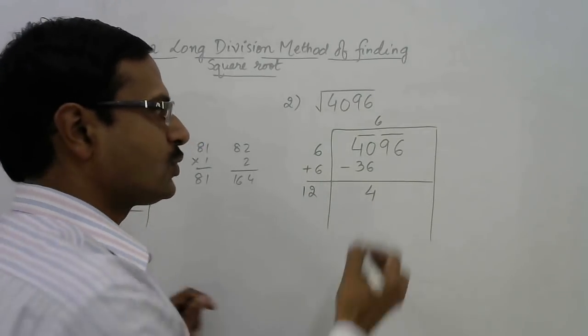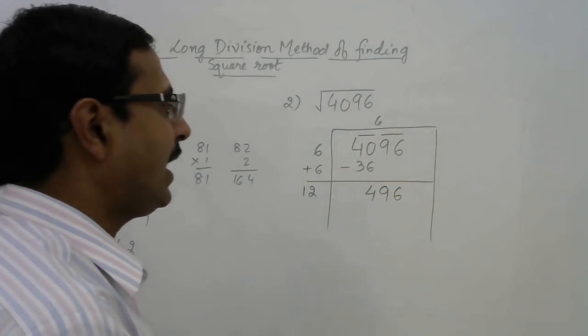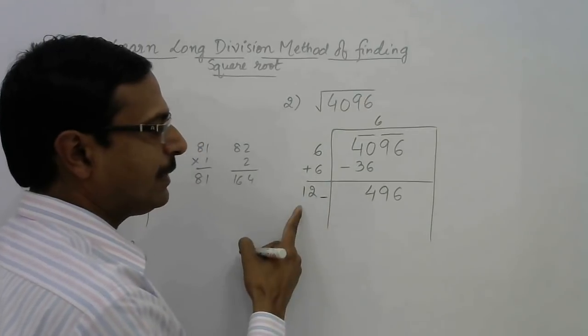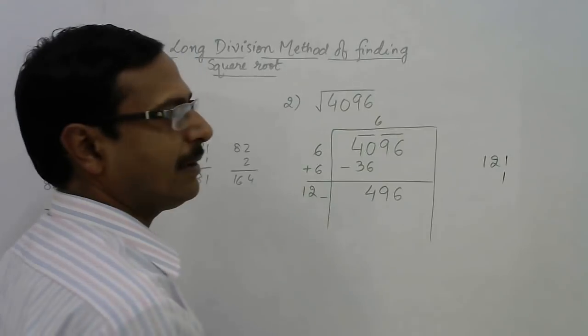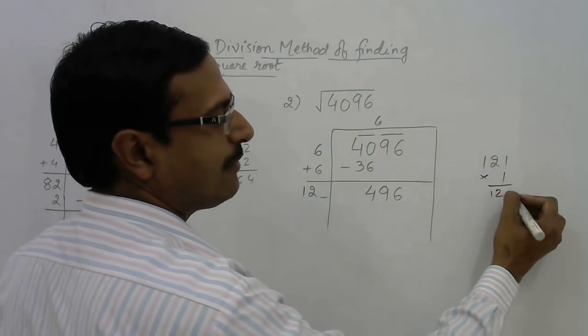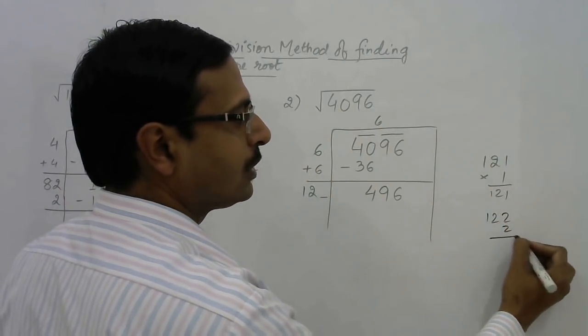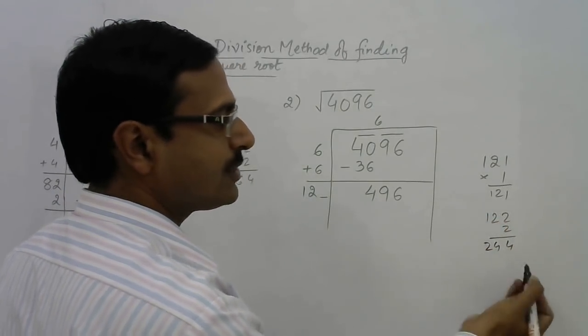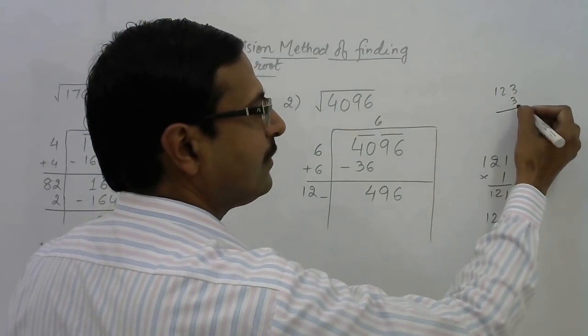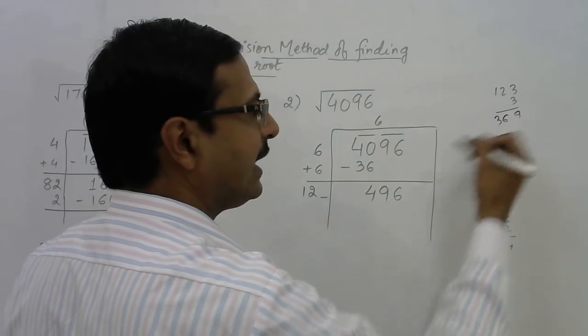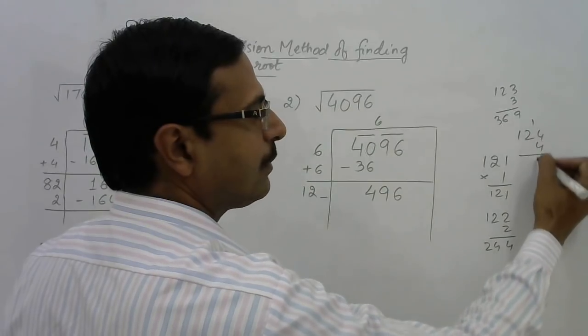12 is more than 4, so next pair 96 comes down. Now you have to choose a number to make this a 3 digit number. Suppose I choose 1, then 121 gives 121 which is very much less than 496. Choose higher—for 2 this gives 244 which is again less.